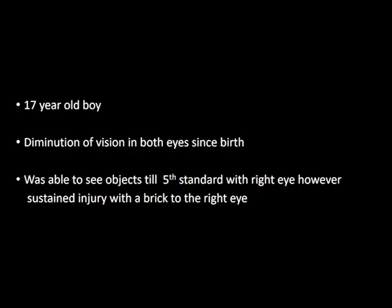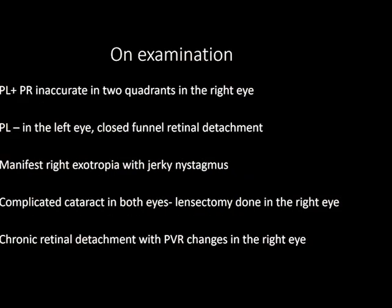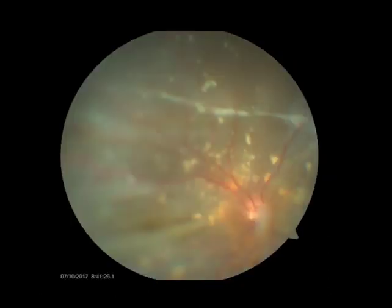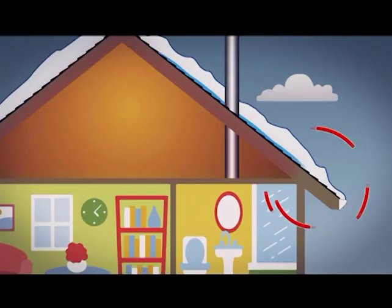A 17-year-old boy, ambulatory till the 5th standard with his right eye, now had perception of light inaccurate vision following an injury with a brick. There was chronic retinal detachment with extensive PVR.